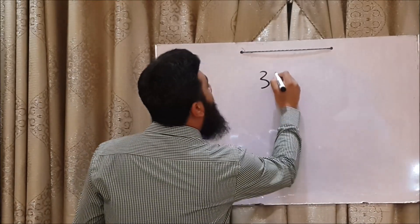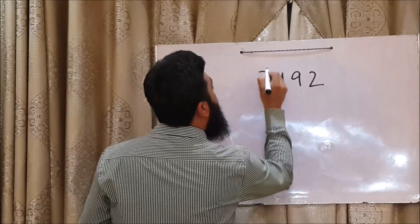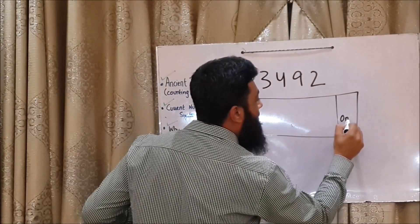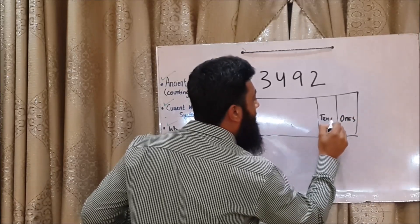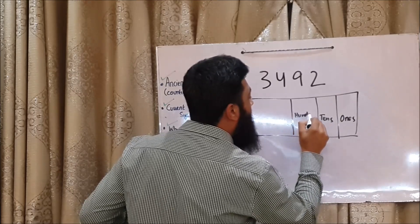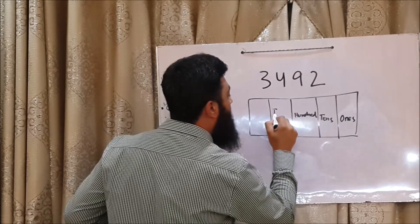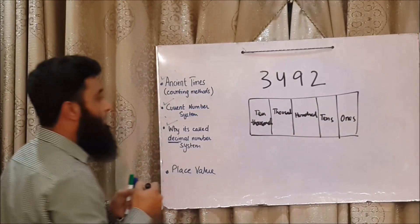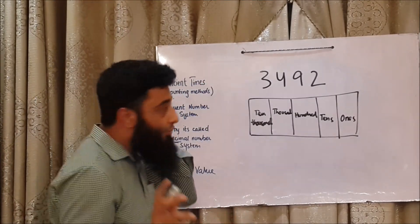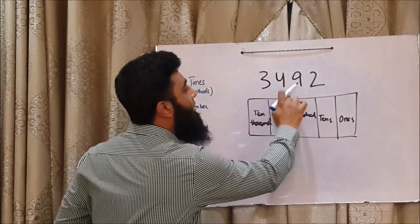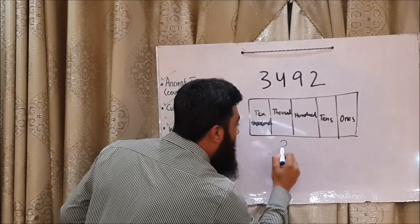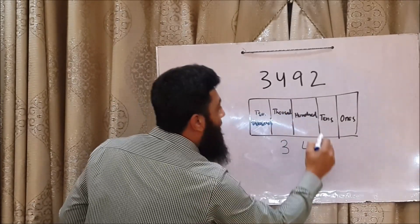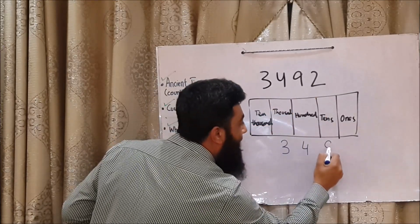For instance, if we take 3492 — let me make a place value chart for you. It goes like this: we have ones, tens, hundreds, thousands, and ten thousands. If we have to write 3492 using this place value chart, we will write three just beneath thousands — three thousand. And four under hundreds — four hundred. And ninety-two.